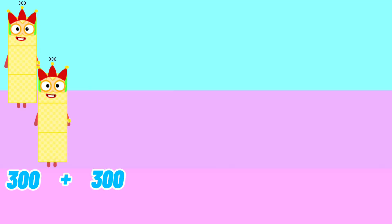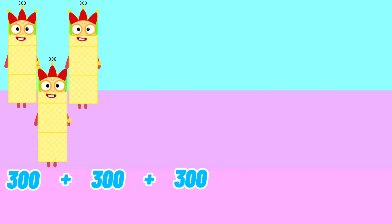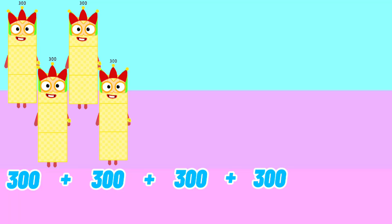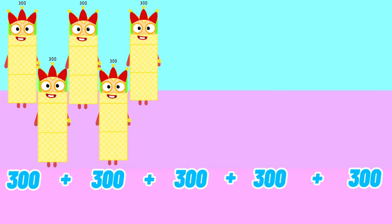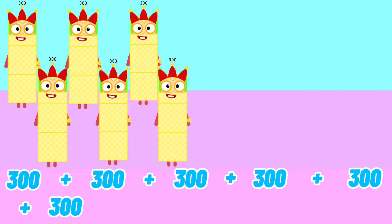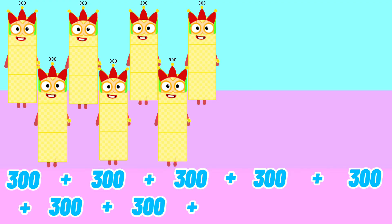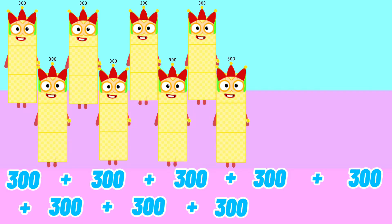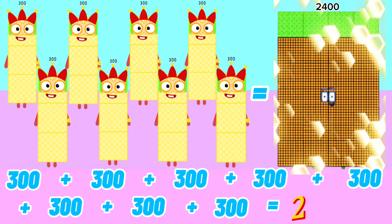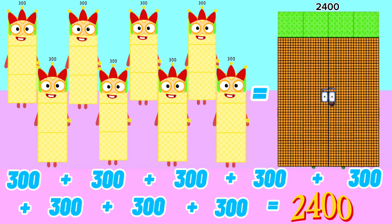300 plus 300 plus 300 plus 300 plus 300 plus 300 plus 300 plus 300 is equals to 2,400.